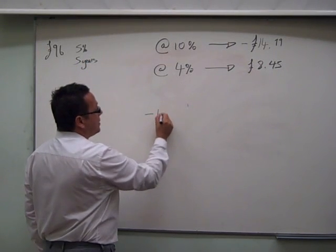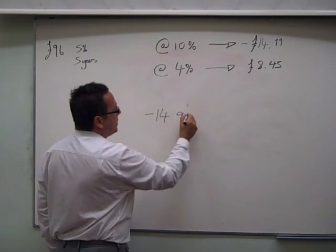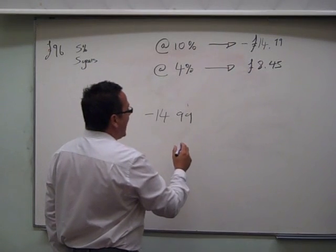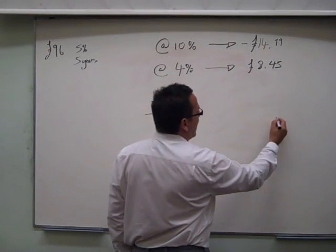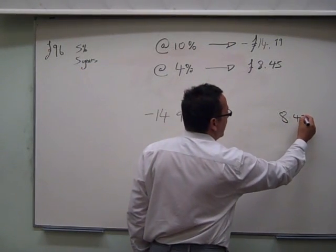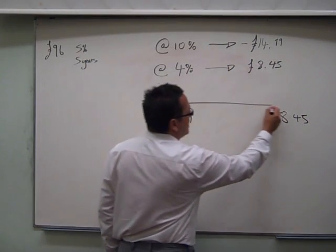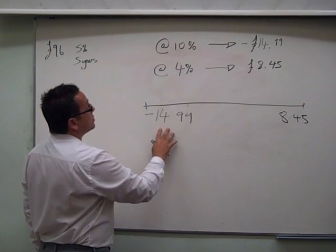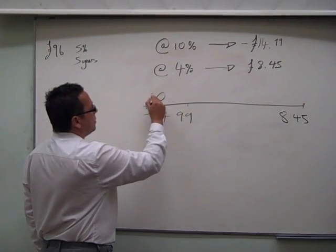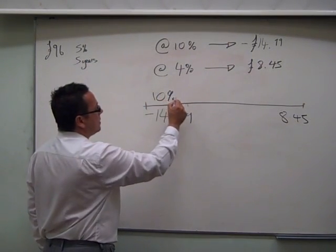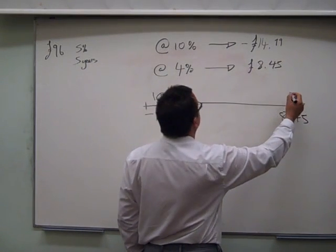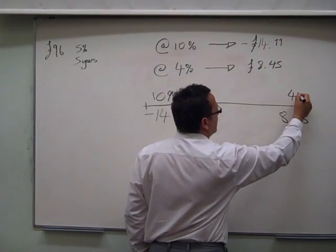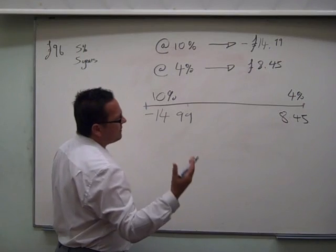I am starting down here in the doldrums, at minus 14.99. And I'm travelling all the way up to 8.45. And if I was to take that as a journey, start to a finish. Of course, where I began was at 10%. And where I am here, of course, was at 4%. And just trying to visualise that,